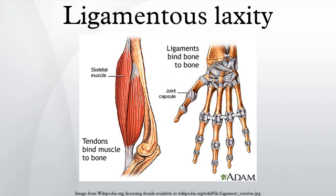In a normal body, ligaments are naturally tight in such a way that the joints are restricted to normal ranges of motion. This creates normal joint stability. If muscular control does not compensate for ligamentous laxity, joint instability may result.